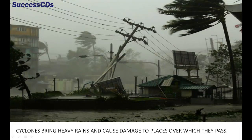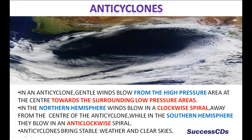Cyclones bring heavy rains and cause damage to places over which they pass. In an anti-cyclone, gentle winds blow from the high pressure area at the center towards the surrounding low pressure areas. In the northern hemisphere, winds blow in a clockwise spiral away from the center of the anti-cyclone, while in the southern hemisphere they blow in an anti-clockwise spiral. Anti-cyclones bring stable weather and clear skies.